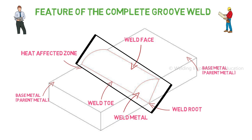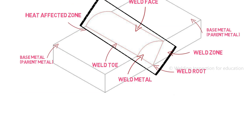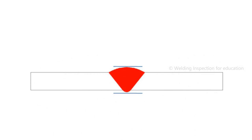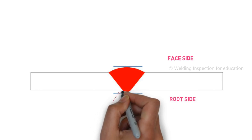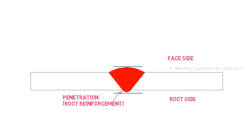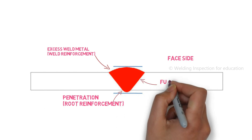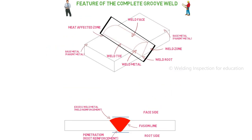The area around the weld metal is called the heat affected zone, mostly around two to three inches. Because of the welding, that area gets hot and the metallurgical structure of that area is changed, which is why it is called the heat affected zone. It is very important for metallurgical purposes. Everything together makes up the weld zone. For this groove weld, the top side of the weld is called the weld face side, and the other side is called the root side. Extra weld beyond the metal towards the root is called penetration, and extra weld towards the face is called reinforcement of the joint. The imaginary line between weld metal and base metal is called the fusion line.